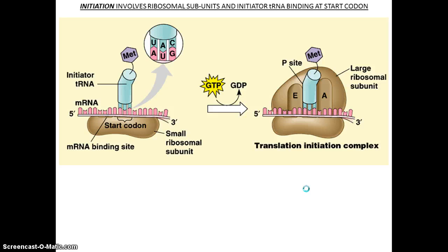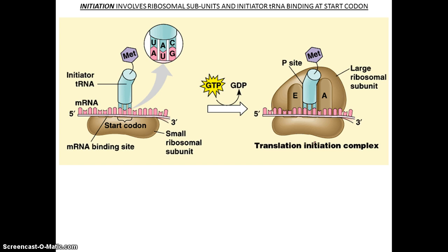The first step in translation is initiation, where the small subunit of the ribosome binds to the mRNA along with a tRNA carrying the starter amino acid methionine (Met). Once that binds, you add energy in the form of GTP and add the large ribosome subunit, forming the translation initiation complex.